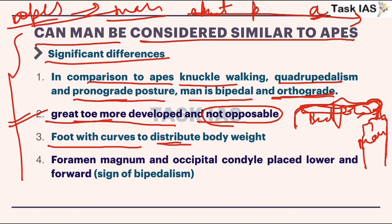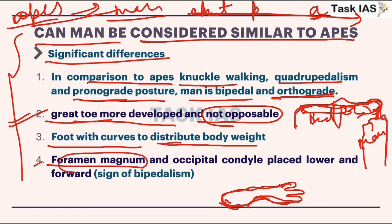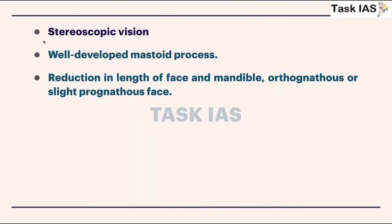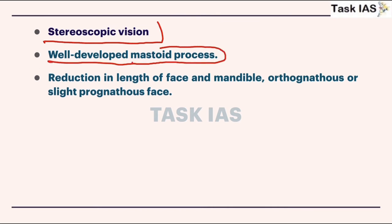The foot has arches to distribute body weight. If we draw a leg, there are some arches present — these help in successful bipedal locomotion because the weight is distributed on different parts of the leg. The foramen magnum is more forward, and the occipital condyle is placed lower and forward — signs of bipedalism. Stereoscopic vision is well developed. Mastoid process is present — muscles surrounding and below the ears support the brain over the neck and are very well developed.